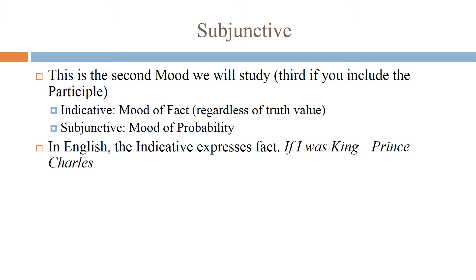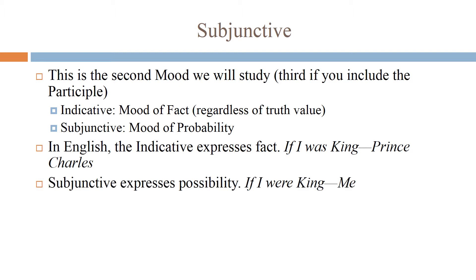In English, the indicative expresses the fact. In the sentence 'if I was king,' that indicative could only be said by someone who actually could be king. So Prince Charles could say, 'if I was king' — if his mother should drop off someday, he would be king. If I say the same thing, however, I have to use the subjunctive, which expresses possibility but not fact. I would say, 'if I were king.' I'm never going to be king; I'm nowhere in the succession line. But if I were king, I would have done the following things.